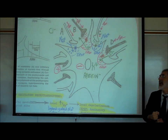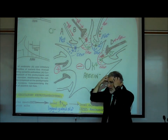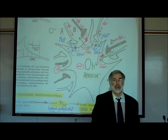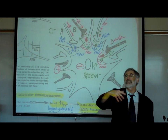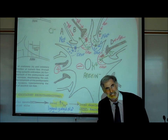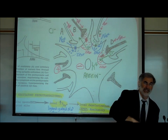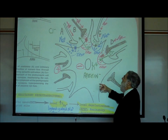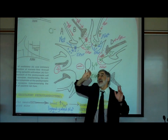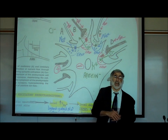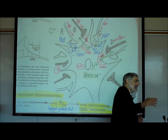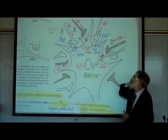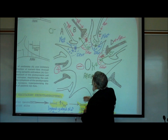In our brain, neurons are releasing all kinds of different chemicals: dopamine, serotonin, norepinephrine, acetylcholine, endorphins, and many others. This means each neuron may have multiple receptor sites — dopamine receptor sites, serotonin receptor sites, norepinephrine receptor sites. That's what we're going to be seeing here.